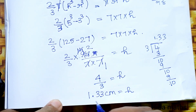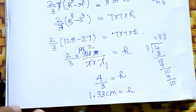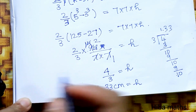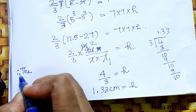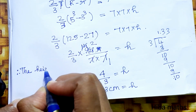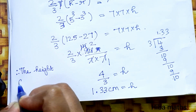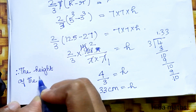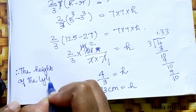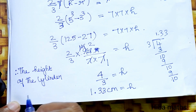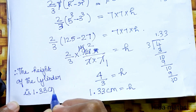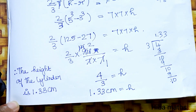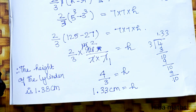So the height of the cylinder is 1.33 cm. Therefore, the height of the cylinder is 1.33 cm. Thank you so much for watching.